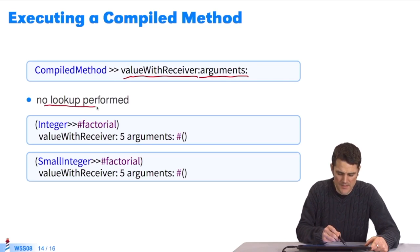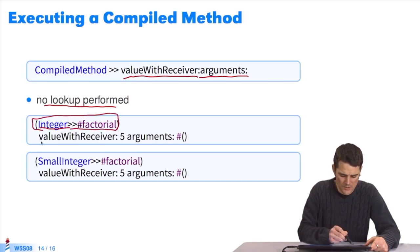A compiled method can be asked to execute itself directly with the message value with receiver arguments. But watch out, if I do that, there's no lookup. Seeing as I already have a compiled method, it executes itself directly without a message. Here, I'll ask the integer class to get its compiled method factorial, which I get from the class compiled method. I send it the message value with receiver arguments. I pass it the arguments, the receiver will be 5. The arguments will be parentheses, because it's a unary message, and we'll get the result. It triggers execution of the compiled method without lookup.